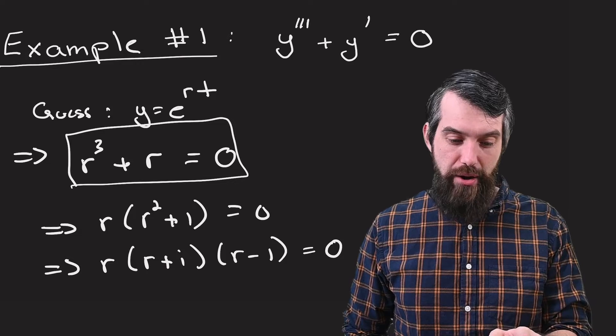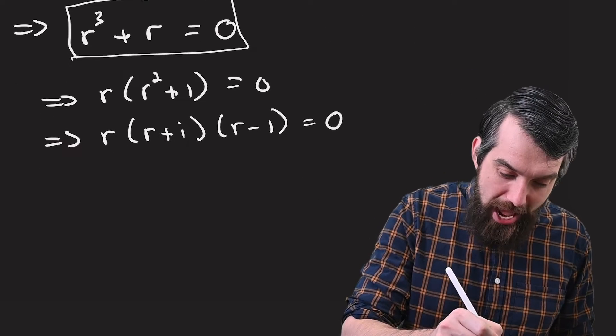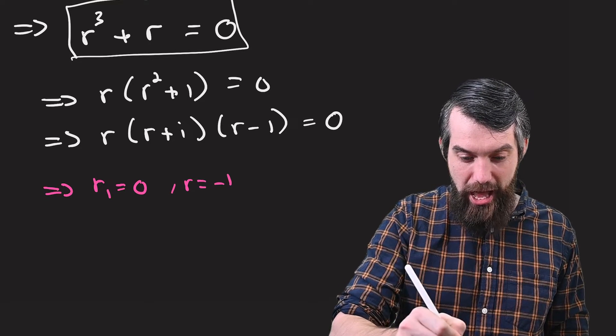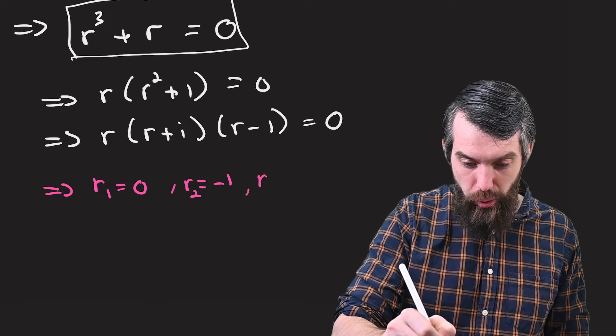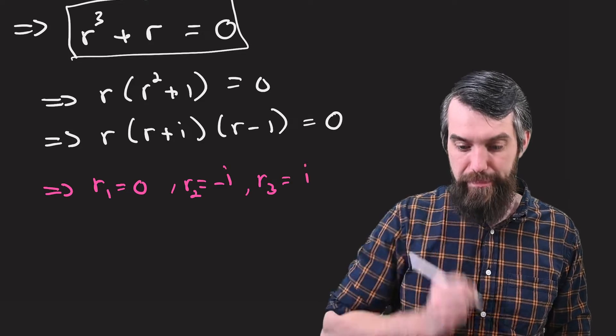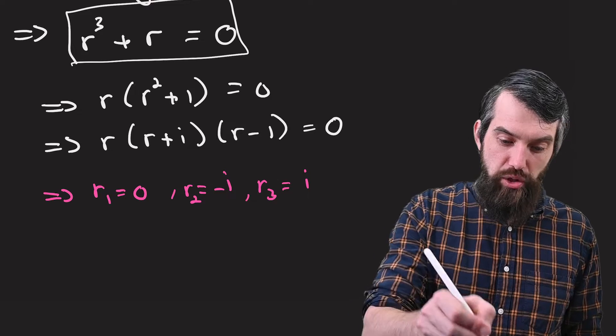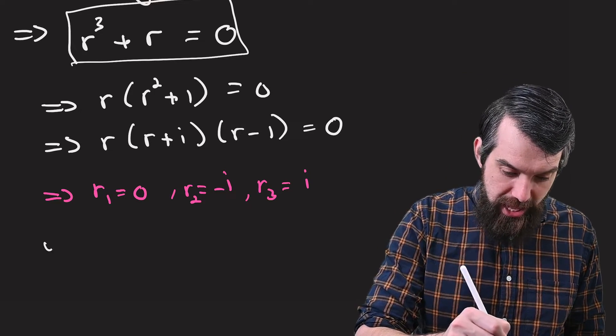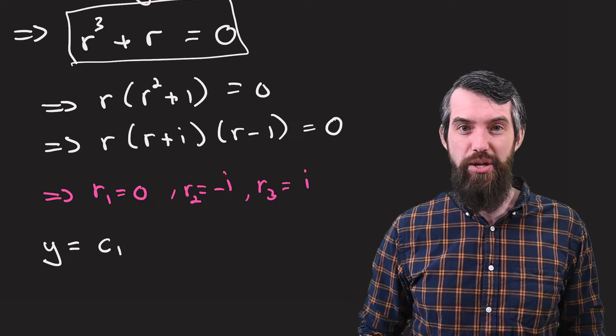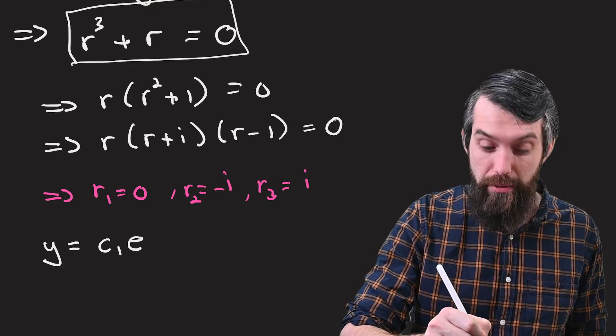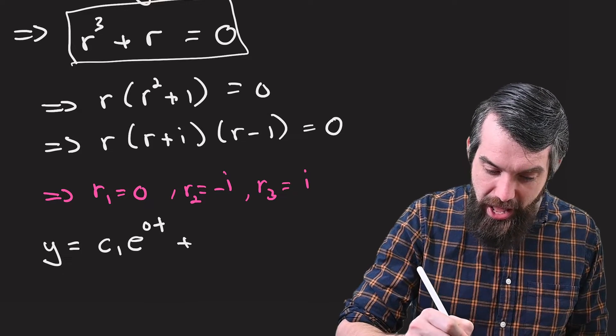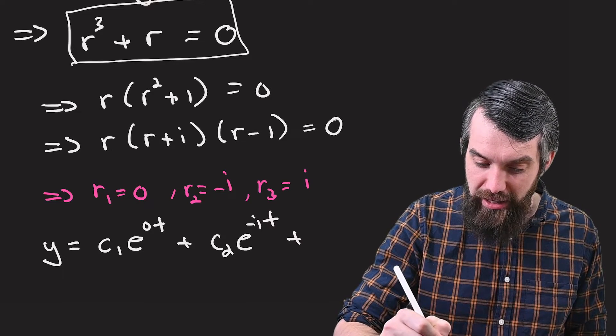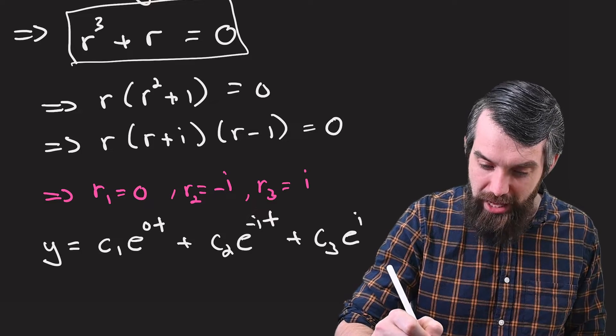So what do I have? From this characteristic equation, I see now that I have three different roots. r1 equals 0, r2 equals minus i, and r3 equals plus i. Since our solutions were of the form e to the rt, my general solution looks like this: c1 multiplied by e to the, well, r is 0, so 0 times t, plus c2 e to the minus i times t, and then finally c3 e to the plus i times t.